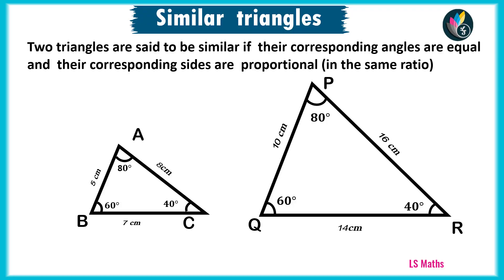Look at these two triangles, triangle ABC and triangle PQR. Angle A is equal to angle P, angle B is equal to angle Q, angle C equal to angle R. All the three angles are equal. Corresponding angles are equal.